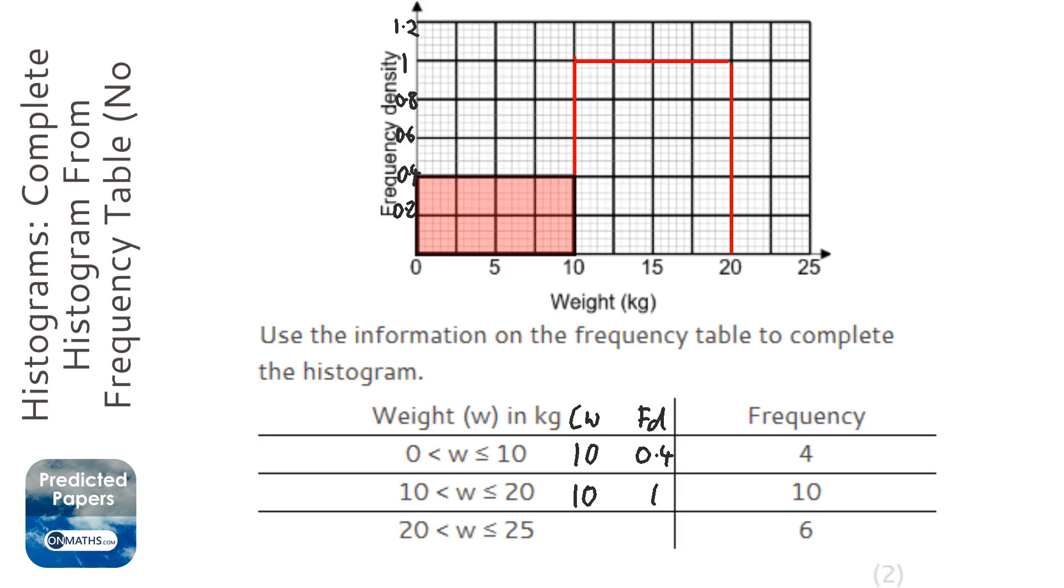Like that, and the last one, class width is 5, and the frequency is 6, so it's going to be 6 divided by 5, which is 1.2. So let's put that in, and there we go.